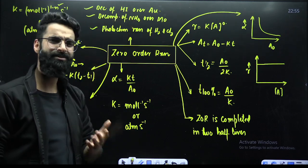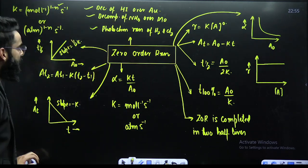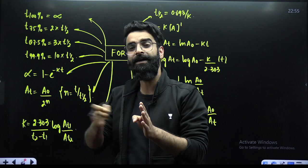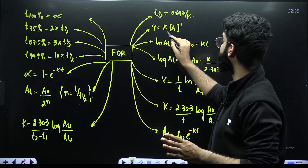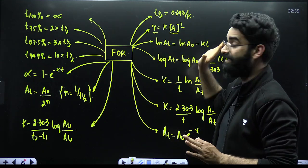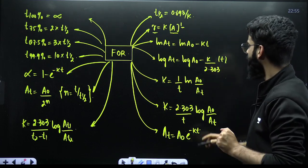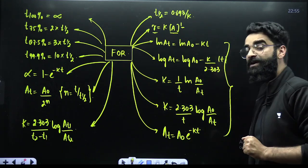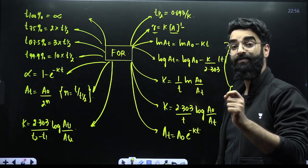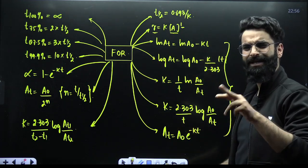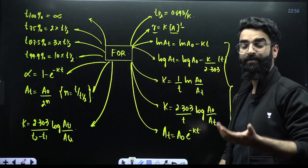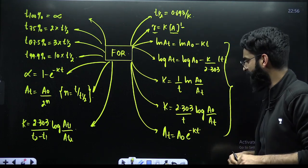Moving on to first-order reactions: a first-order reaction is one in which rate varies linearly with the concentration of reactant. If you double the concentration, rate doubles; if you triple it, rate triples. The different forms of the integrated rate equation for first-order kinetics are: ln(A_T) equals ln(A_0) minus KT, where A_0 is the initial concentration and A_T is the concentration at time T. Another form is: log(A_T) equals log(A_0) minus K divided by 2.303, multiplied by T.